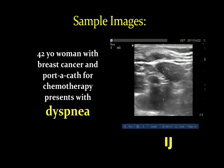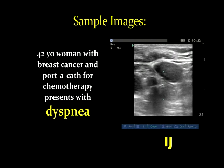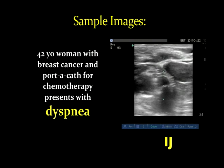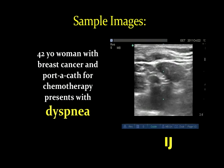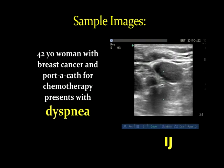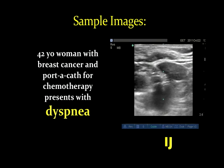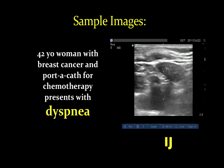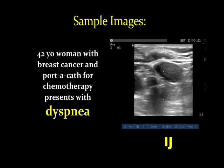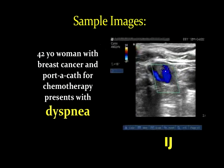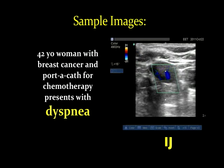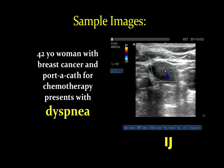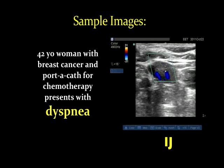A 42-year-old woman with breast cancer and a port-a-cath presented with dyspnea. This is her internal jugular vein. With gentle compression, there appeared to be something not allowing full compression. When color was applied, we see some flow — so this is a non-occlusive deep venous thrombosis of an internal jugular vein.